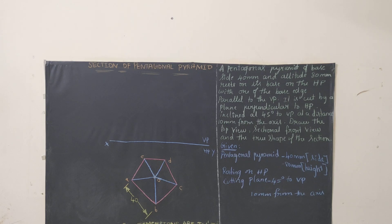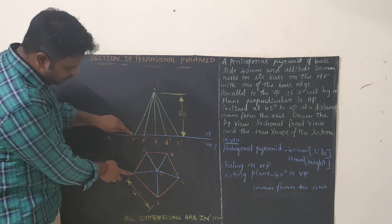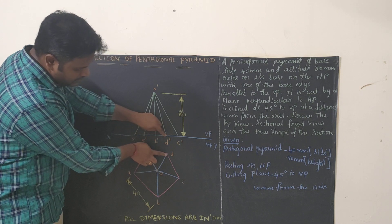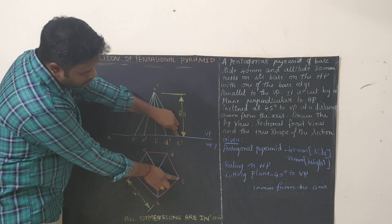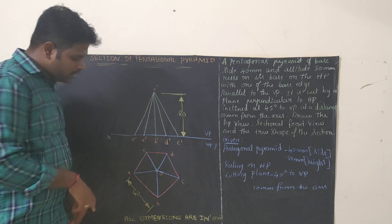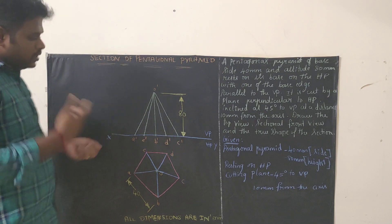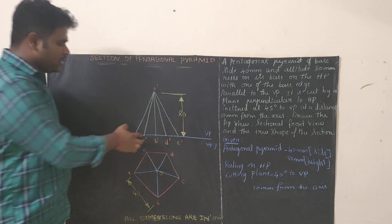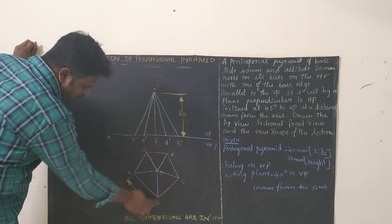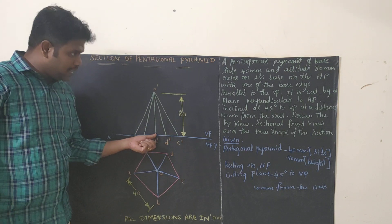Now when we extend the top view points we can draw the front view. Extend all the top view points vertically. Keep your scale vertically at each point — from A you get one point, from E another, from B another, from D another, and from C a point on the reference line. So we get 5 points on the reference line. OB is a visible edge so it will overtake the axis — that's why the axis is not shown. From here, looking from the front: you can see A as A-dash, E as E-dash, B as B-dash, D as D-dash, and C as C-dash.